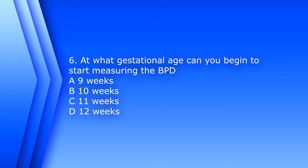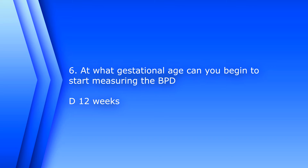Number 6. At what gestational age can you begin to start measuring the BPD, or the biparietal diameter? A. Nine weeks. B. Ten weeks. C. Eleven weeks. D. Twelve weeks. The answer is D. Twelve weeks.